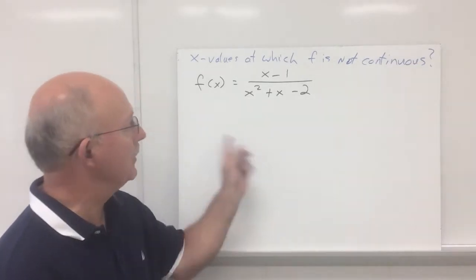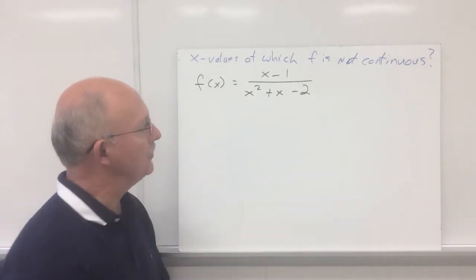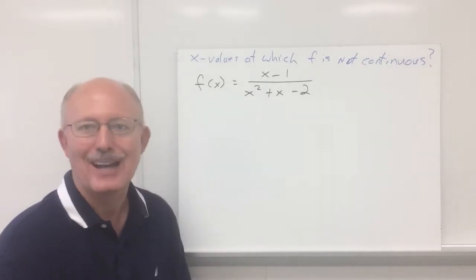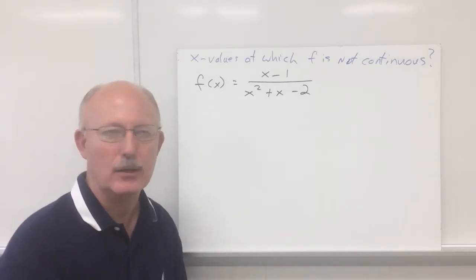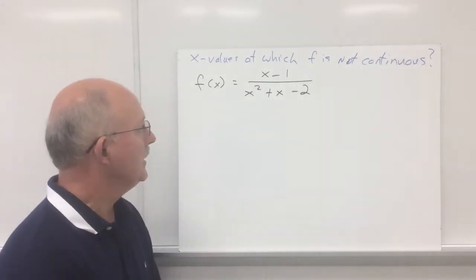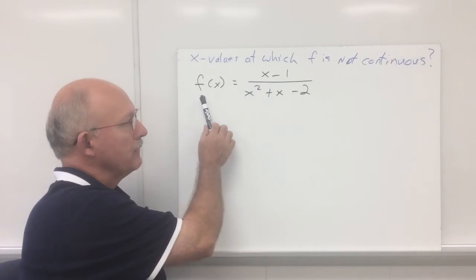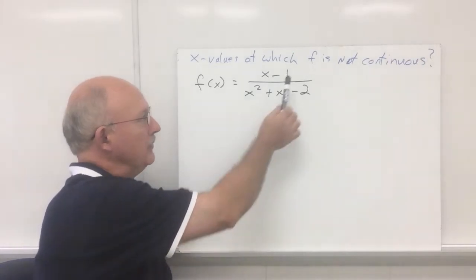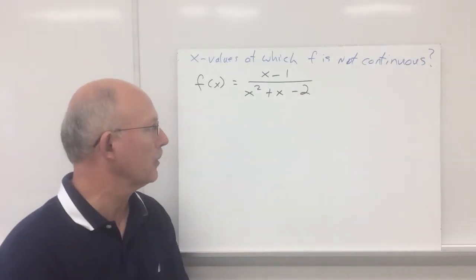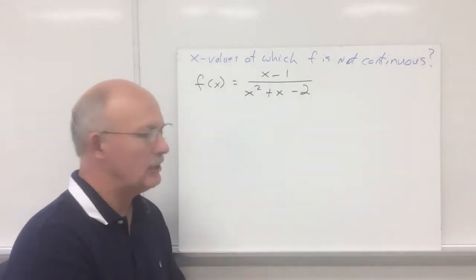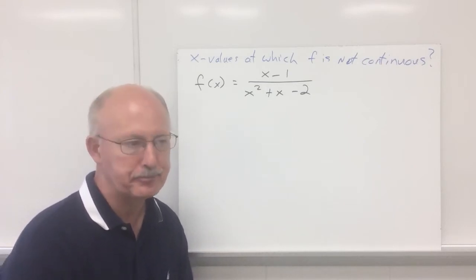Now what we have here is that we're going to find the x values at which f is not continuous — we're just going to get the x values only. Our first problem is our function: f of x equals x minus 1 over x squared plus x minus 2. Now this is a typical rational function.